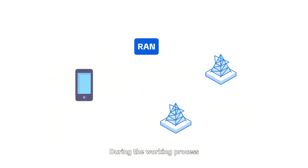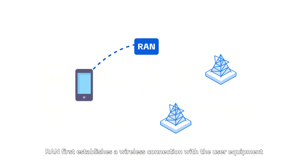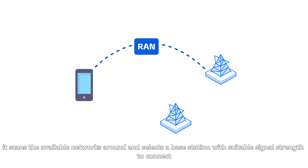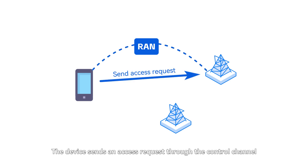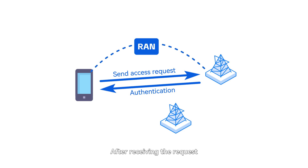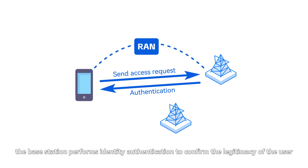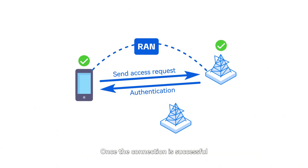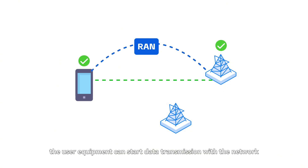During the working process, RAN first establishes a wireless connection with the user equipment. When the user turns on the mobile phone or other wireless device, it scans the available networks around and selects a base station with suitable signal strength to connect. The device sends an access request through the control channel. After receiving the request, the base station performs identity authentication to confirm the legitimacy of the user. Once the connection is successful, the user equipment can start data transmission with the network.